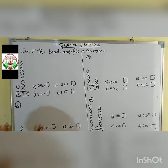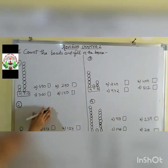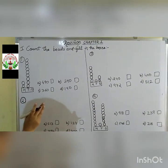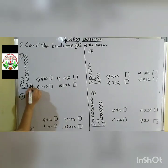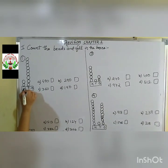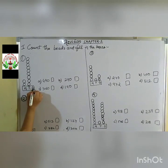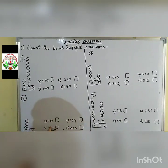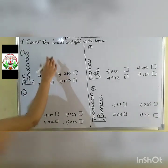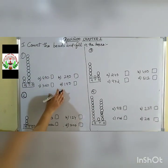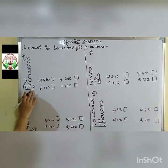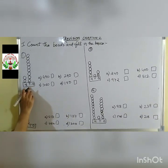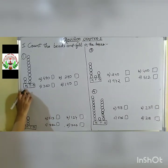Children, now there are questions with 3-digit numbers. Do you know 3-digit numbers? They contain 1s, 10s, and 100s. We will solve these questions: count the number of bits and fill in the boxes, starting from the 1s place, then the 10s place, then the 100s place.